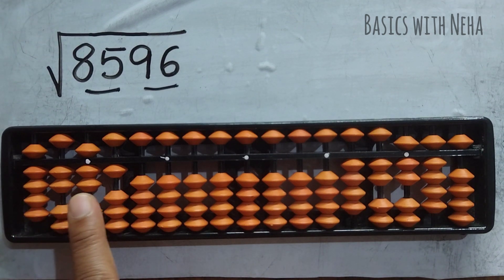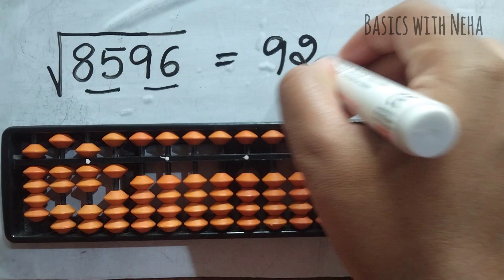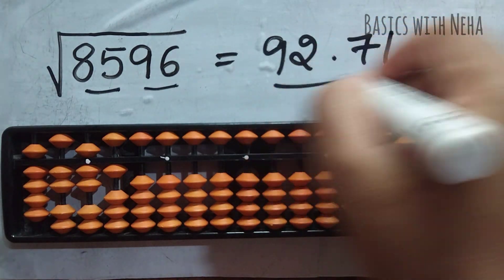If I have to leave it in only two decimal places, my answer will be 92.71. I can leave it here.